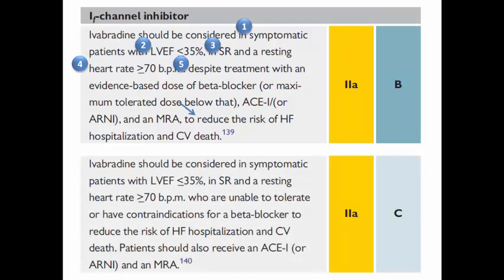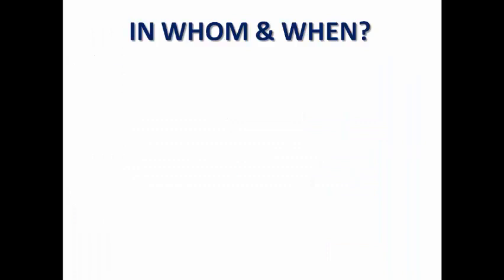It also has a class 2a recommendation in the same situation — symptomatic patients, ejection fraction ≤35%, sinus rhythm, and resting heart rate ≥70 — but here the patient is unable to tolerate the beta blocker or has a contraindication for it, aiming to reduce the risk of hospitalization and mortality. In this case the patient should receive the evidence-based dose of ACE inhibitor or ARNI and MRA.